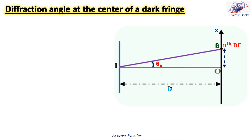Let's discuss the diffraction angle at the center of a dark fringe. The figure represents a top view of the experimental setup. Point I represents the center of the narrow slit, point O is the center of the central bright fringe, and point B represents the center of the nth dark fringe — it could be the first, second, third dark fringe, etc. IO is the direction of the original incident laser beam, and IB is the line joining the center of the slit and point B. Theta n is the diffraction angle for point B, which is the angle between the incident beam and the line IB.